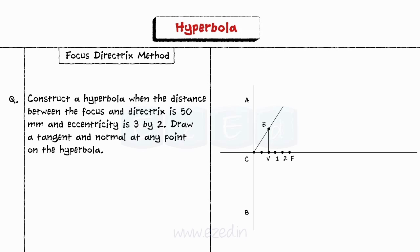Join C-E and extend it. Step 5. Mark more points ahead of F at equidistance. Step 6. Now draw vertical lines from each and every point and name them.